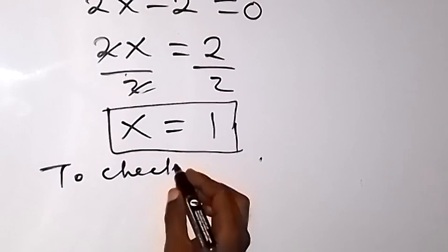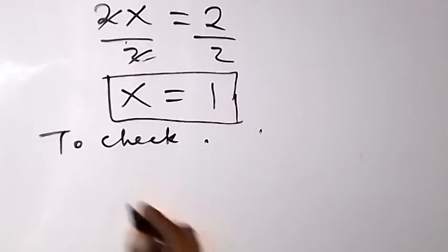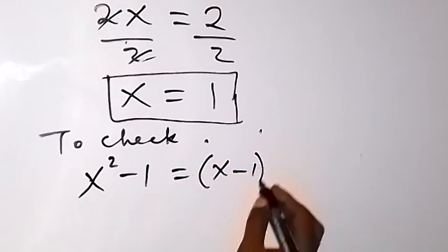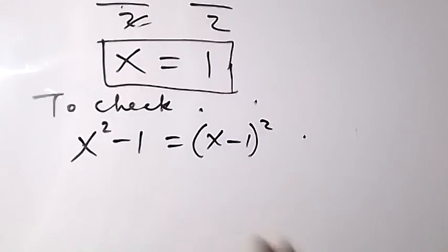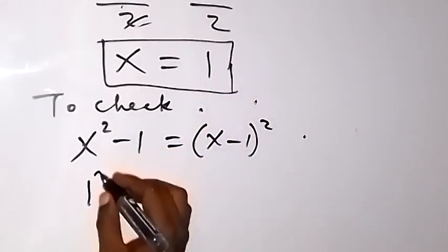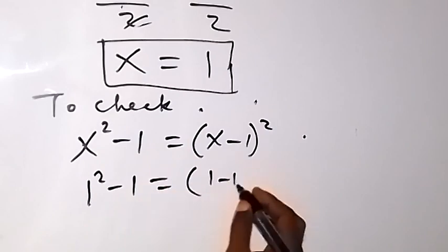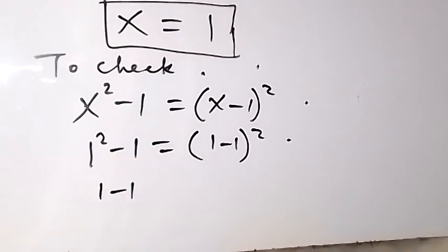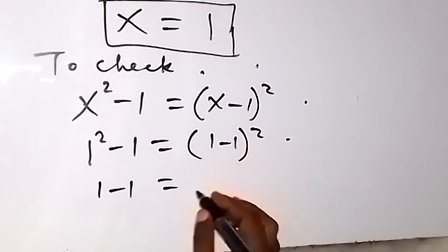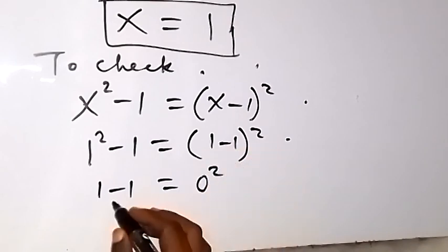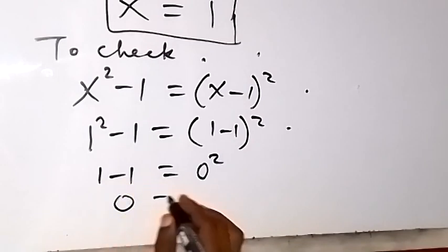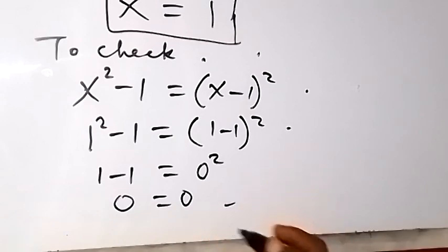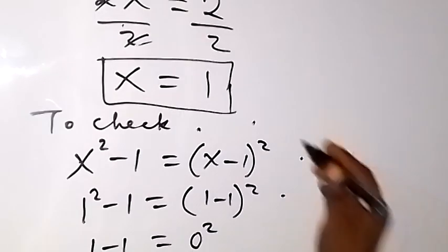Then to check x equals to 1, to check from there what you are given is x² - 1 = (x-1)². So from here substitute 1 for x. We have 1² - 1 equals to (1-1)². So 1² is 1, so we have 1 - 1. 1 - 1 is 0. 0², 1 - 1 is 0, so we have 0 equals to 0² is 0. And the left-hand side, that means x equals to 1 is the solution we are looking for here.